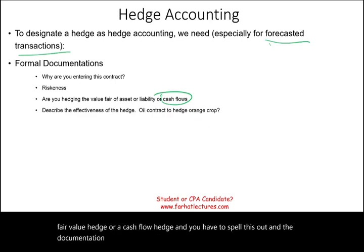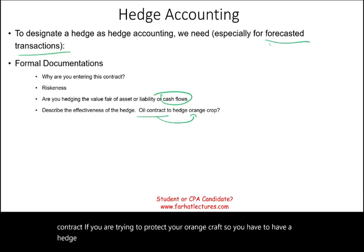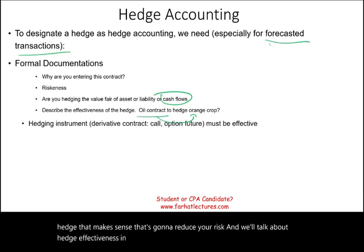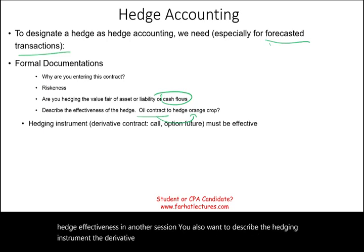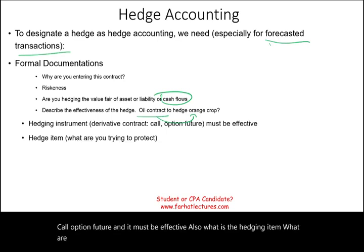You must describe the effectiveness of the hedge — for example, you don't buy an oil contract if you are trying to protect your orange crop. The hedge has to make sense and reduce your risk. You also describe the hedging instrument — the derivative you are using, such as a call, option, or future — and it must be effective. You must also specify the hedging item: what you are trying to protect. All of this must be documented to qualify for hedge accounting.